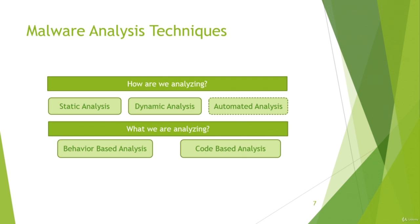Another way to divide techniques is either analyzing from a behavioral point of view — seeing how the malware interacts in a certain environment and looking for system-based or network-based changes — or analyzing by looking into the code. Keep in mind that it's almost impossible to have the actual source code of malware. The idea is to have the malware running and look into the disassembled machine code to understand its functionality.